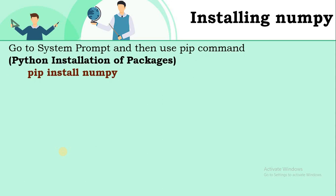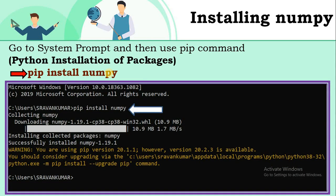The next topic is how to install packages in your system. We use the pip command to install packages in Python. Pip stands for Python Installation of Packages. To install numpy, the syntax is: pip space install space numpy, then press Enter. Automatically, numpy will be installed — the latest version available on the internet will be downloaded and installed in your system. Your computer must be connected to the internet.